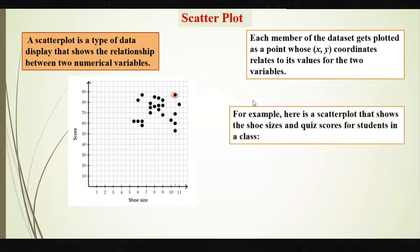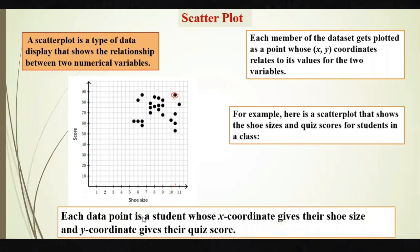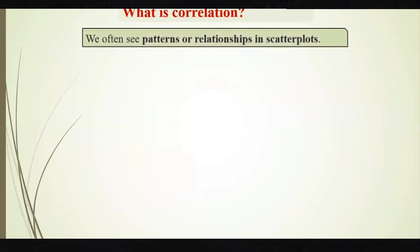Here is the scatter plot that shows shoe size on the x-axis and score in a quiz on the y-axis. Each data point represents a student — the x-coordinate gives their shoe size and the y-coordinate gives their quiz score. This is what is called a scatter diagram, since the data points for the students are scattered over the graph.